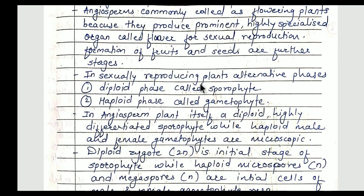Unless the sporophytes are not grown properly, they are not going to produce haploid cells, which means the gametophyte. Haploid is written as 'n', meaning half the number of chromosomes — chromosome number is 23. Those cells are called haploid cells. First the sporophyte should be grown properly, and then the sporophyte has the capacity to form haploid cells, that is the gametophyte.